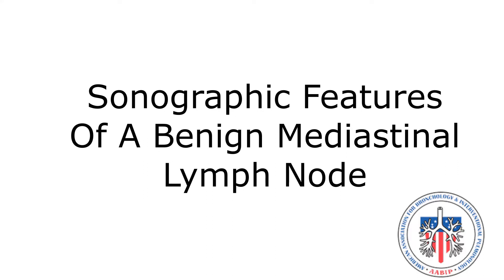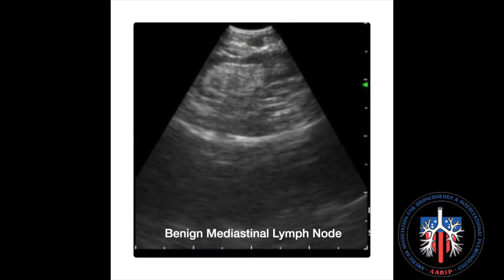Sonographic features of a benign mediastinal lymph node. This is an ultrasound image of a benign lymph node using a linear EBUS bronchoscope.